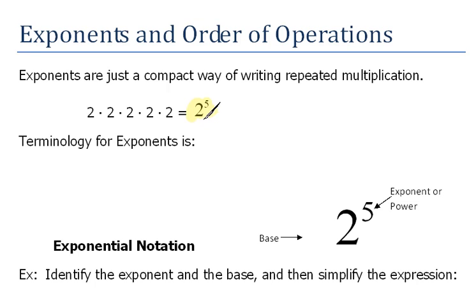This bottom number here is the number that tells us what we're multiplying. And this superscript number, the one that's written above there, is telling us how many times. That's what that represents.